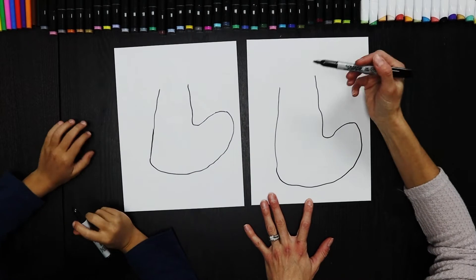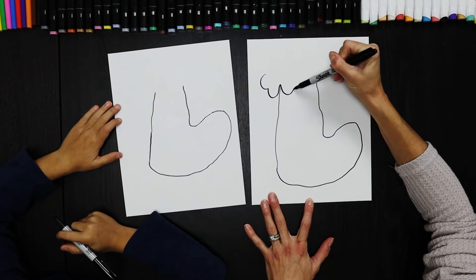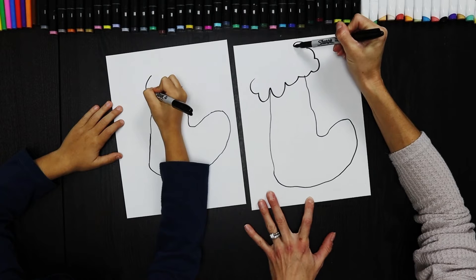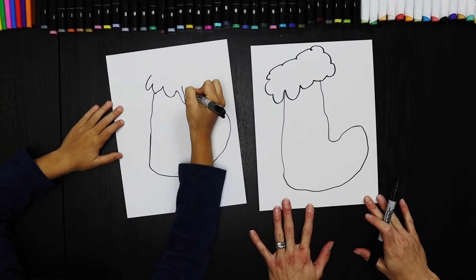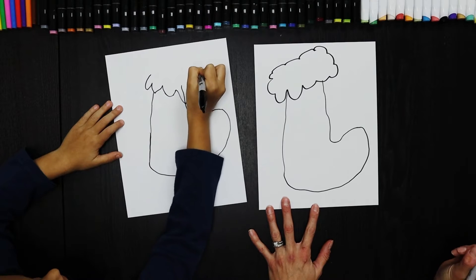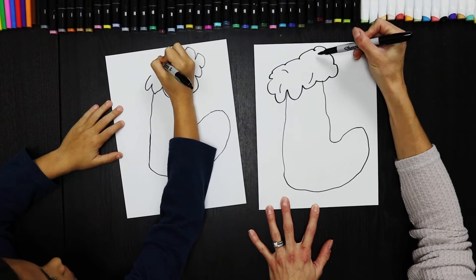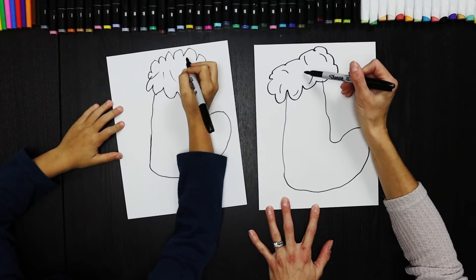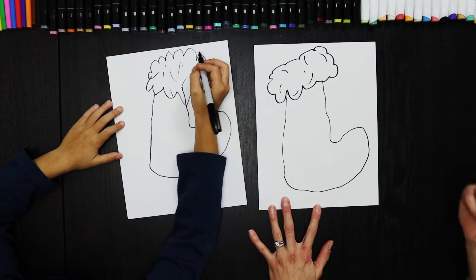Okay, now we're gonna give this kind of a bushy top here. All right, there you go, good. Give it a little dimension here, it's got some fluff. Loop, loop. Very good.